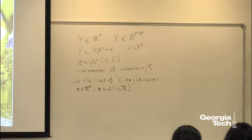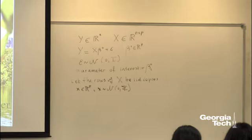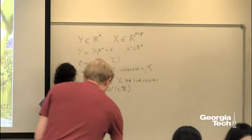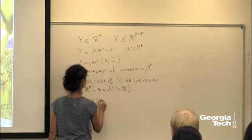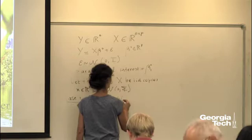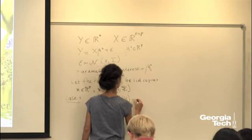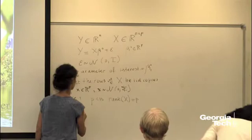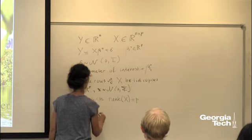Now just go back to the basics. Suppose you can just do least squares. Case 1: the number of parameters is p. Suppose p is less than n, p is fixed, and the rank of x is p. Then you can do least squares: x-transpose x inverse x-transpose y. That's the least squares estimator.